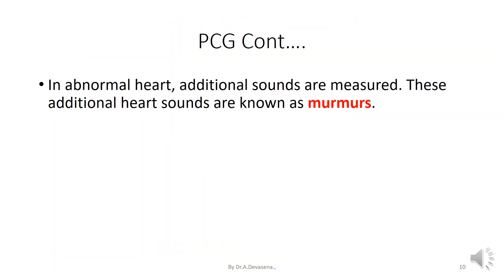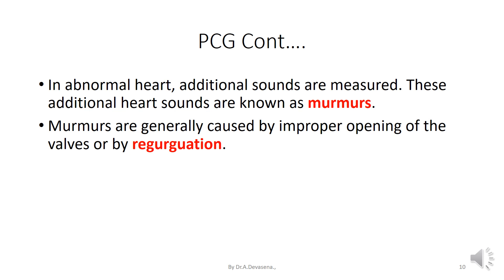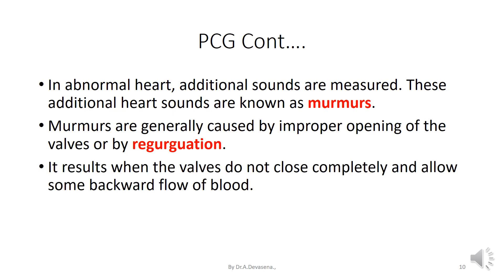In an abnormal heart, additional sounds are measured. These additional heart sounds are known as murmurs. Murmurs are generally caused by improper opening of the valves or by regurgitation. Regurgitation results when the valves do not close completely and allow some backward flow of blood.